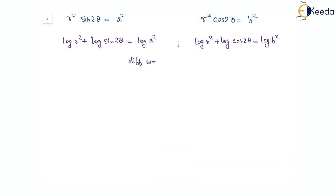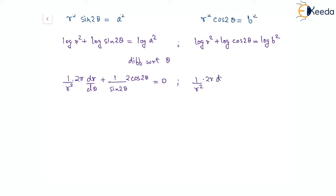Now differentiating with respect to theta. For the first curve, log r² gives (1/r²)(2r)(dr/dθ) plus (1/sin 2θ)(2 cos 2θ) equal to zero. Simplifying, this gives (1/r)(dr/dθ) plus cot 2θ equal to zero.